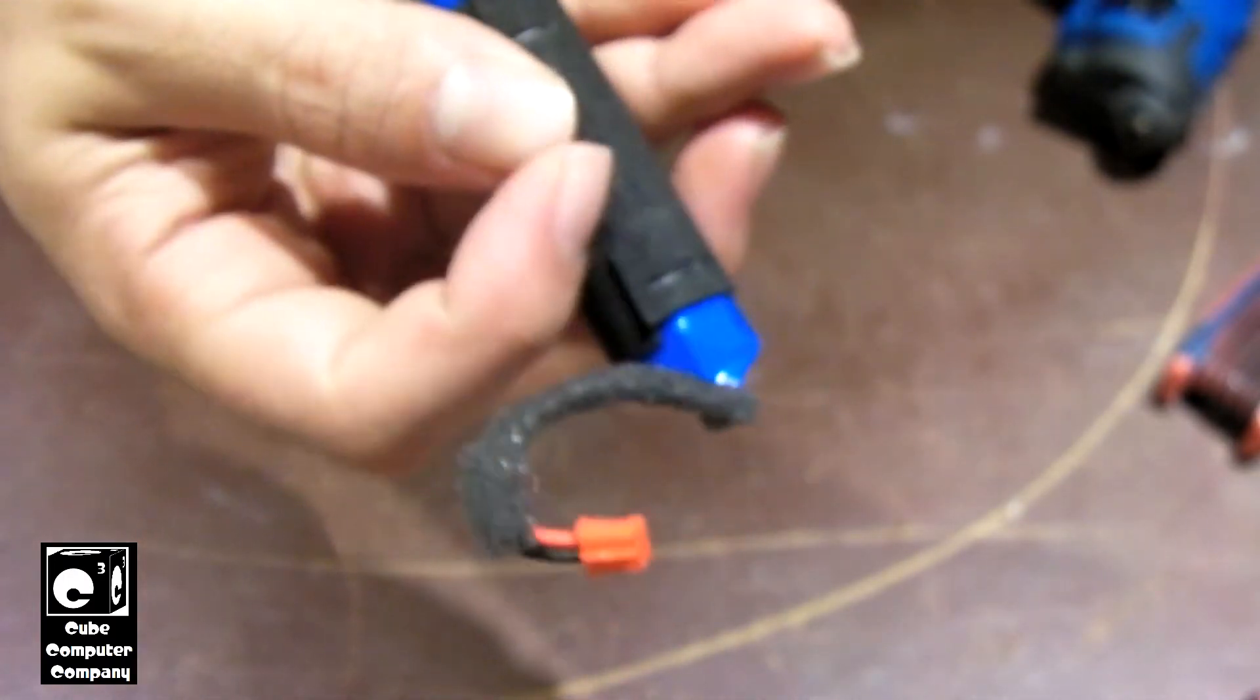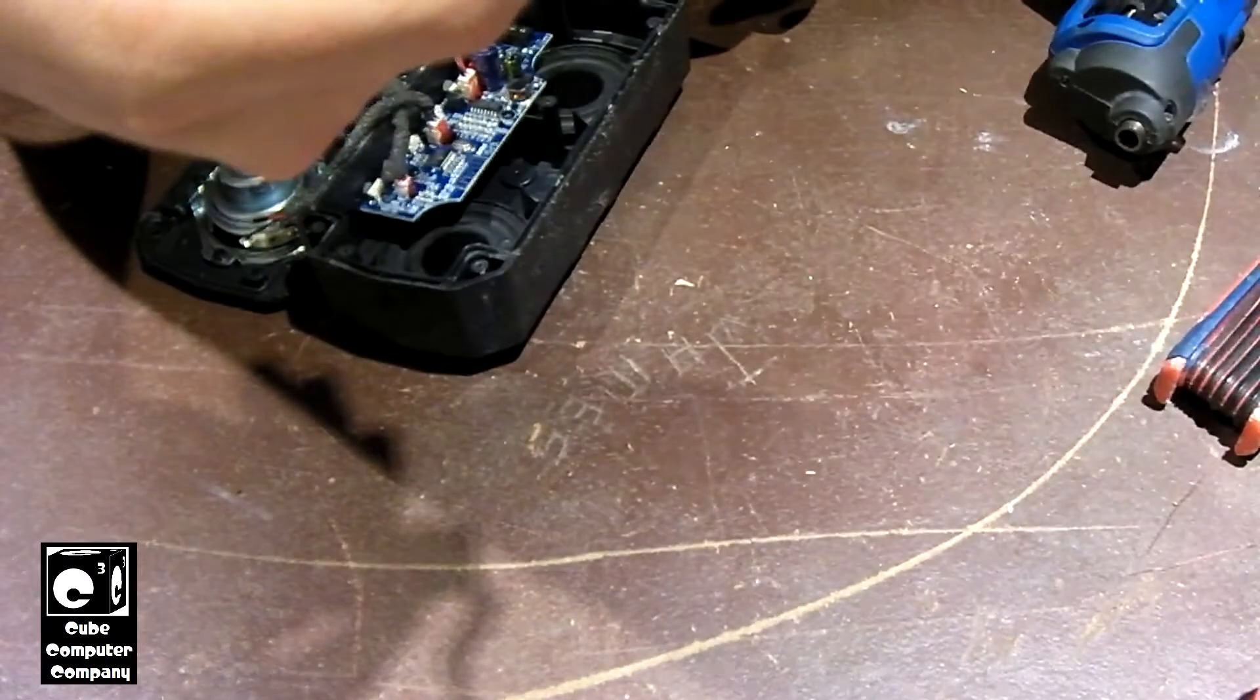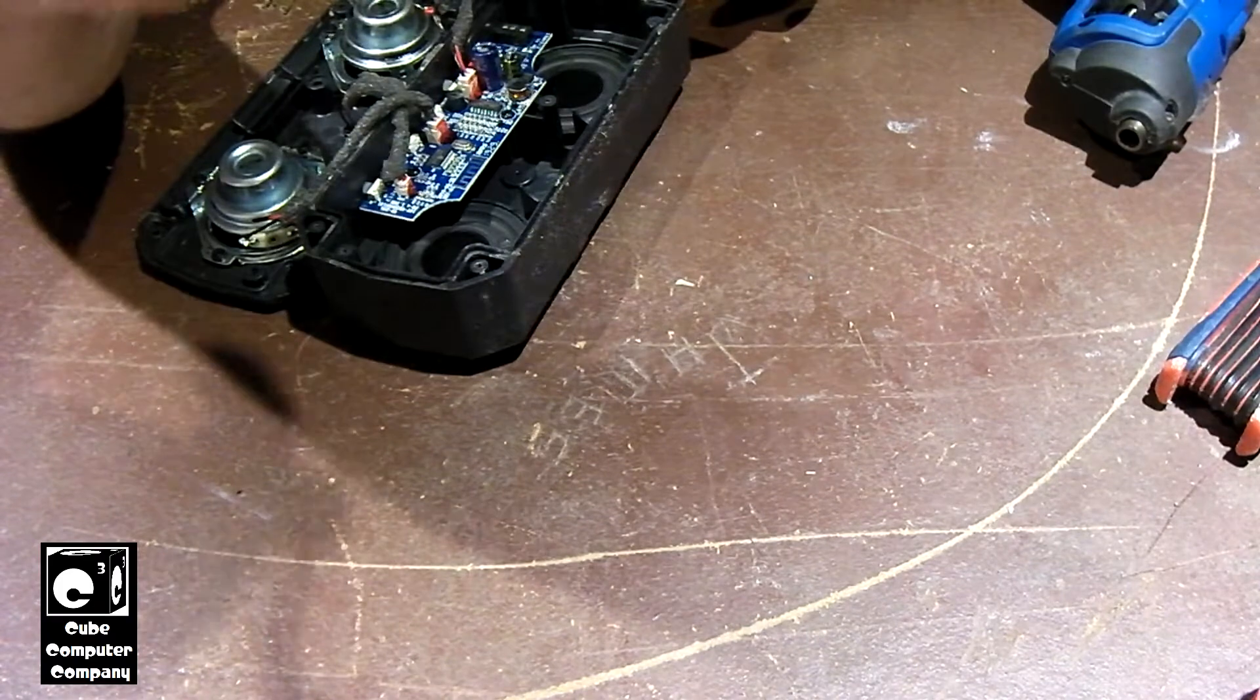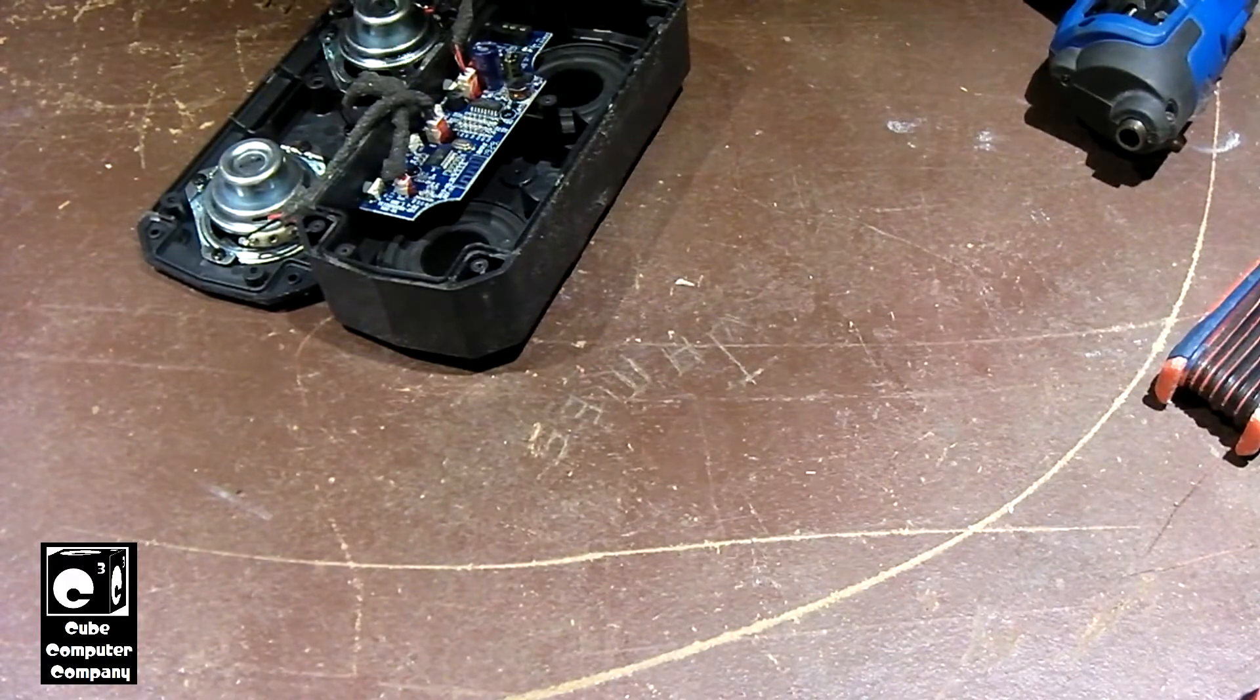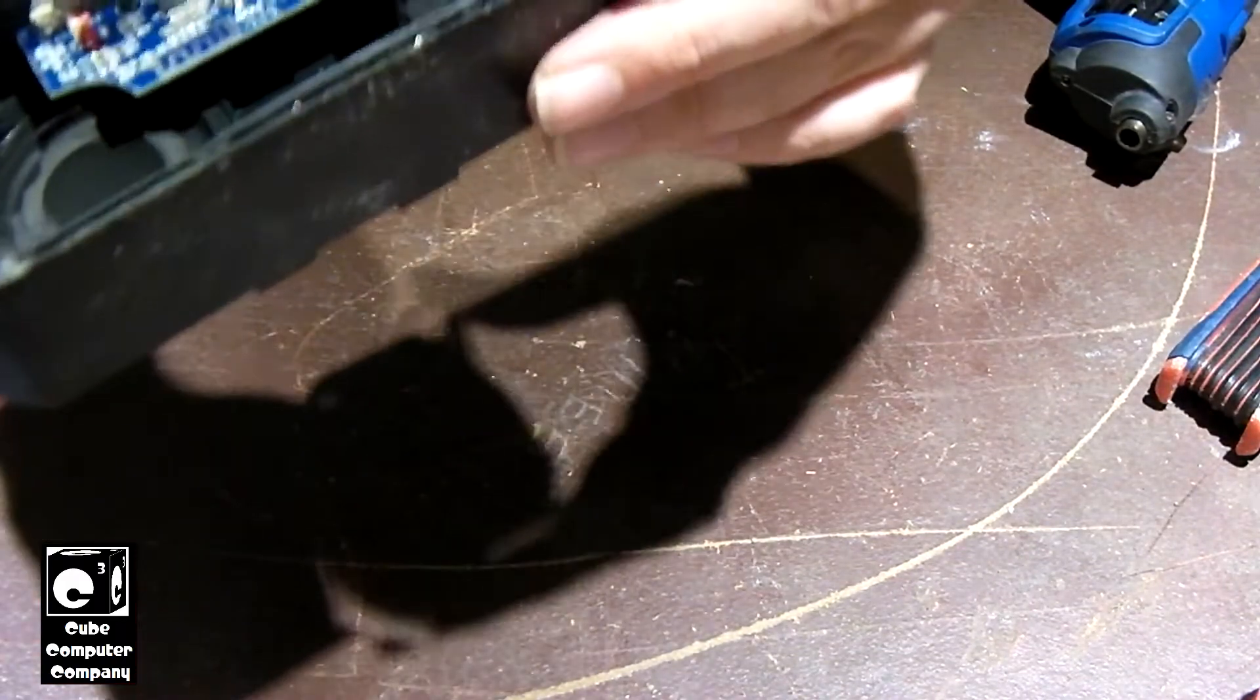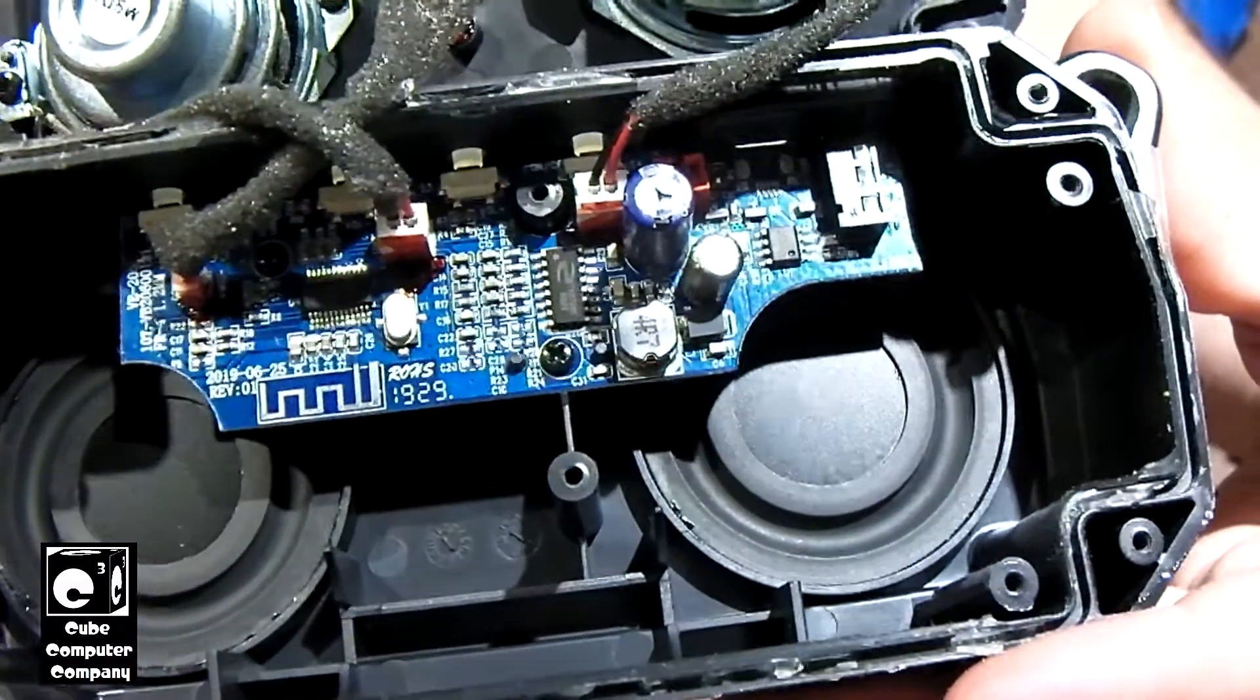So there's your 18650 cell. It's probably got a little protection PCB on there. Assuming the label on the device is correct, it's a 2200 mAh cell, probably lithium cobalt. So anyways, put that to the side. Right here is the circuit board that runs this entire operation.